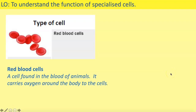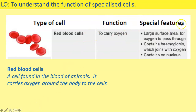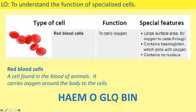The first cell is the red blood cell. A red blood cell is found in the blood of animals and carries oxygen around the body to the cells. Its function is to carry oxygen. Its special features include a large surface area, which means more oxygen can pass through; it contains a pigment called haemoglobin, which joins with oxygen to allow the red blood cells to carry it; and red blood cells have no nucleus, meaning there is more space to carry oxygen.